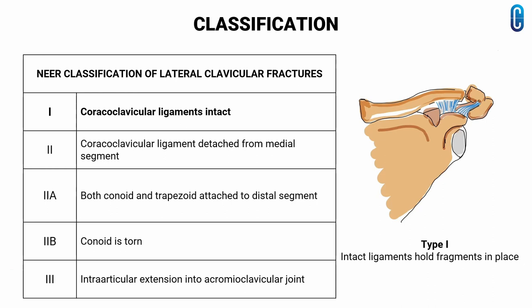We will now see the Neer classification of lateral clavicular fractures. In type 1, the coracoclavicular ligaments are intact and are attached to the medial segment, and these ligaments hold the fragments in place.